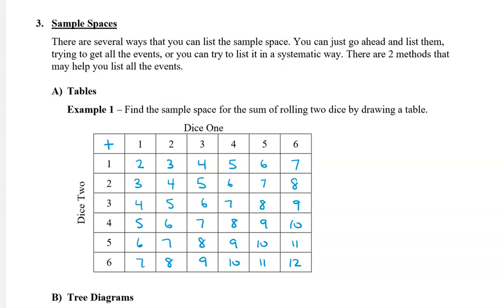Now we can see that there's six by six. There are 36 possible outcomes in the sample space.